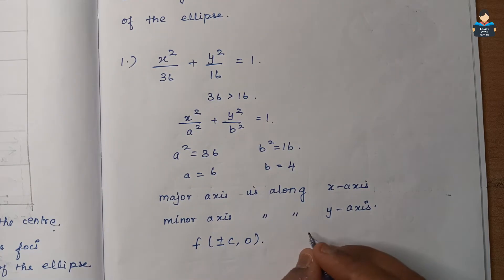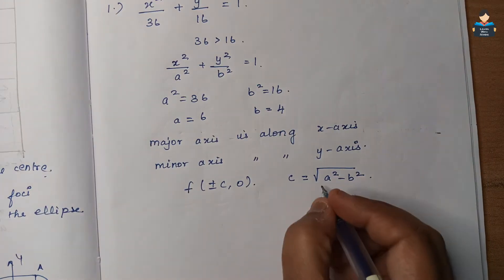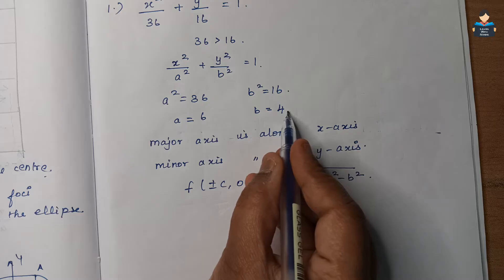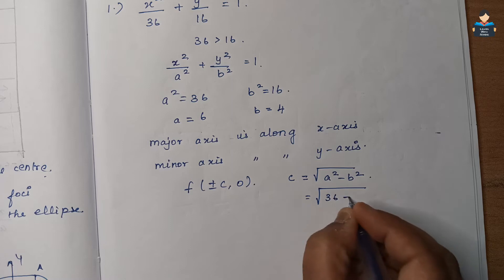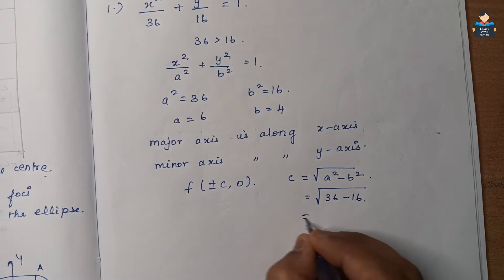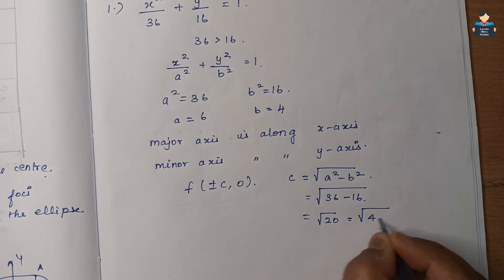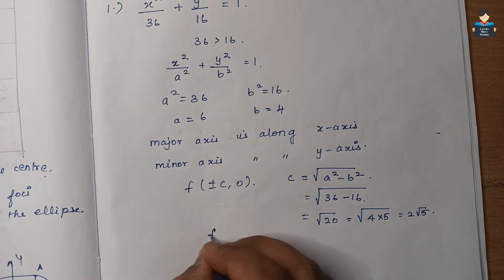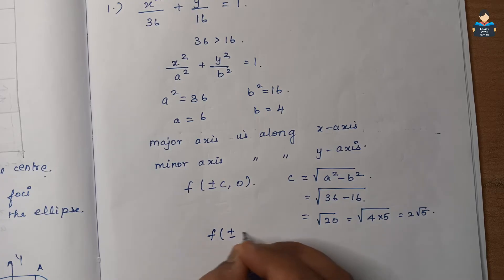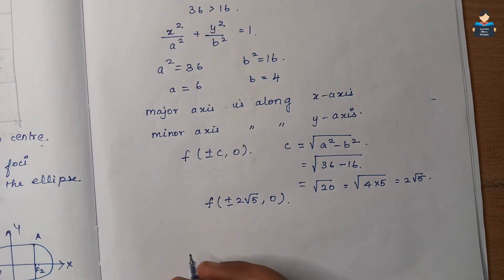To find the foci, c = √(a² − b²) = √(36 − 16) = √20 = 2√5. Therefore, the foci are at (±2√5, 0).